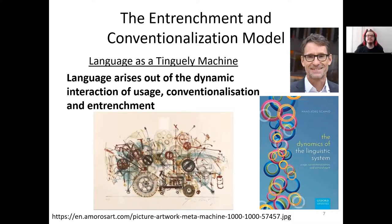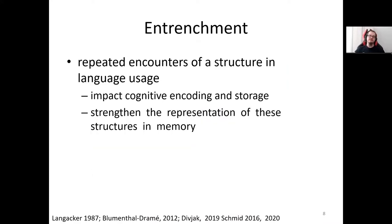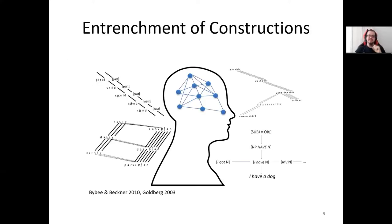What are entrenchment and conventionalization? In this model, entrenchment refers to the fact that repeated encounters with a structure in language use impact the cognitive encoding and storage of these structures and also strengthen the representation of these structures in memory. What that means is that if we have a network of constructions in our minds and brains, they have various connections with each other, and through repetition certain connections get strengthened.